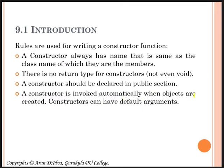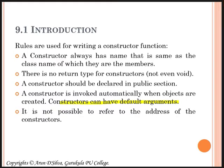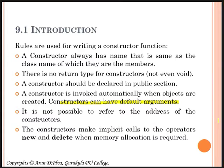A constructor is invoked automatically when objects are created. A constructor can also have a default argument, so that whenever an object is created, values will be initialized. It is not possible to refer to the address of the constructors because it is automatically invoked. The last rule says: a constructor makes an implicit call to the operators new and delete when memory allocation is required.